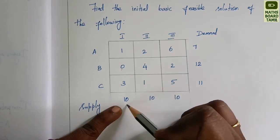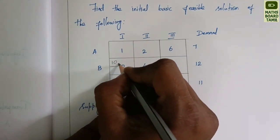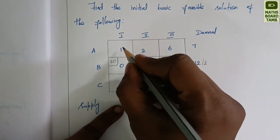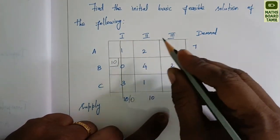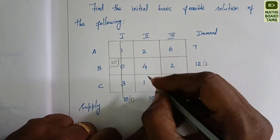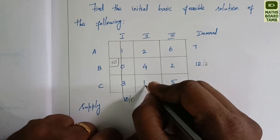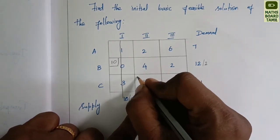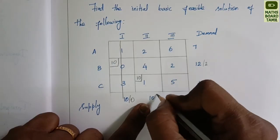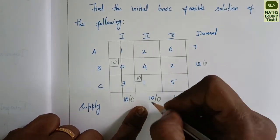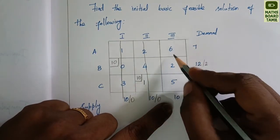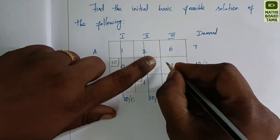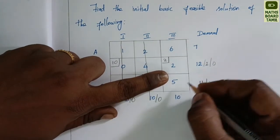We add 10. 10 minus 10 is equal to 0, and 12 minus 10 is equal to 2. Moving to the next allocation: the minimum is equal to 10. 10 minus 10 equals 0, and 11 minus 10 equals 1. Column 1 has demand equal to 2 and supply equal to 10.